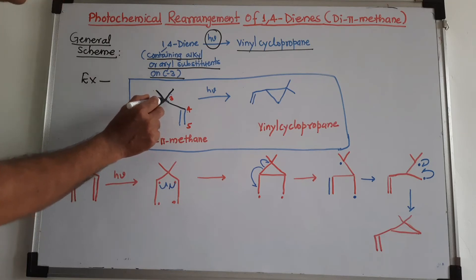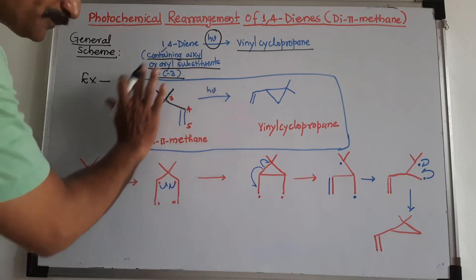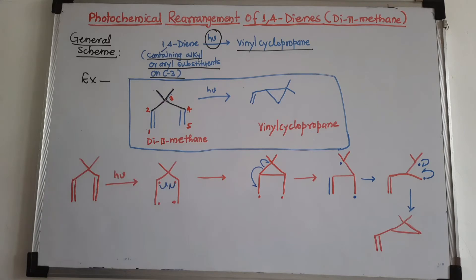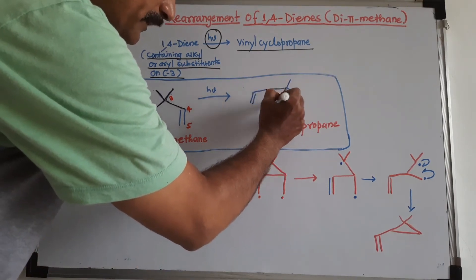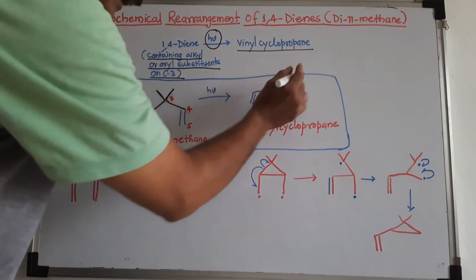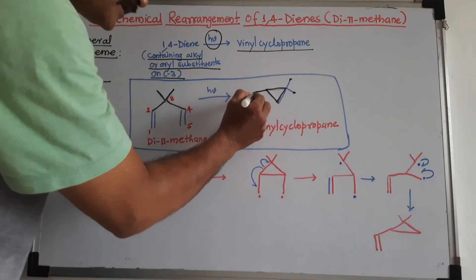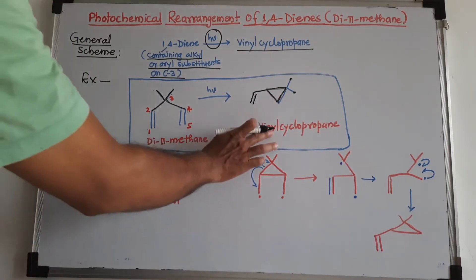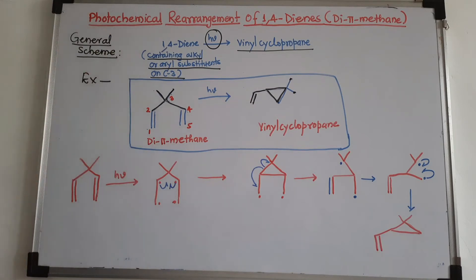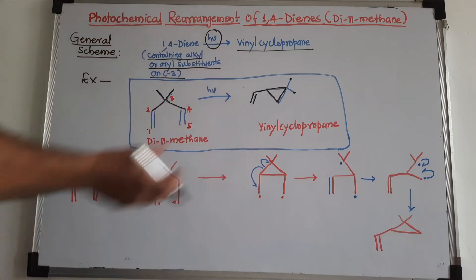In this substrate, the condition is satisfied: at carbon number three there are two alkyl groups. When this substrate is irradiated with light of a certain wavelength, it gives vinyl cyclopropane. There is a three-membered ring — the cyclopropane — and the two methyl groups are still there, along with a vinyl group attached, which is why it is called vinyl cyclopropane. This is a photochemical rearrangement: there is no net loss or gain of any atom; all atoms are just reshuffled and rearranged to give vinyl cyclopropane.